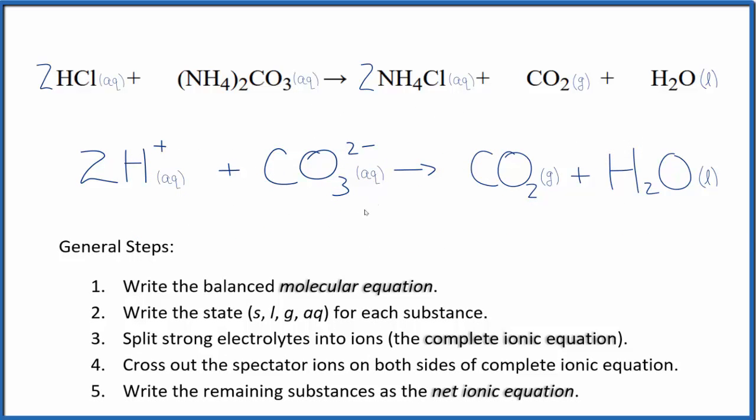And this is the balanced net ionic equation for hydrochloric acid plus ammonium carbonate. You'll note the atoms are balanced and the charge is balanced. We have two times one plus, that's two plus, that cancels out the two minus, gives us a net charge of zero. Over here, everything's neutral, net charge of zero.